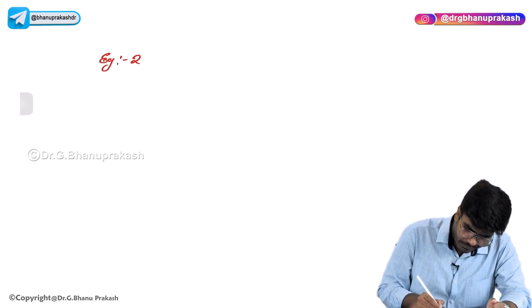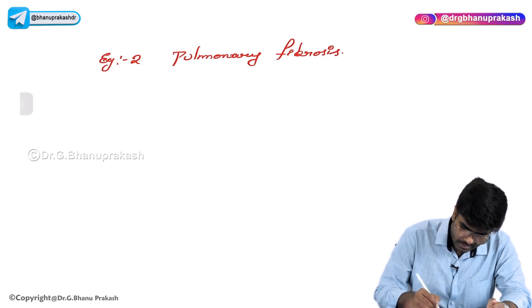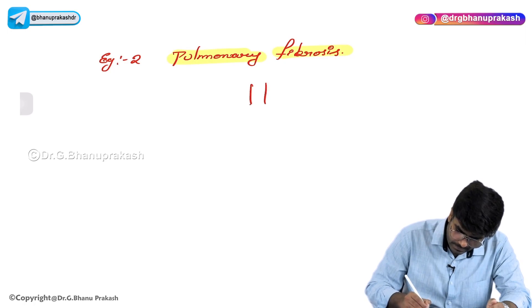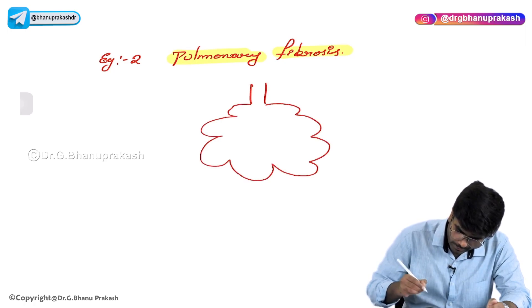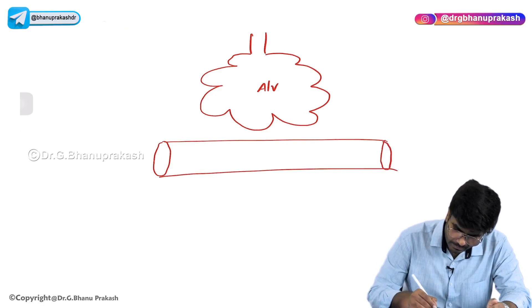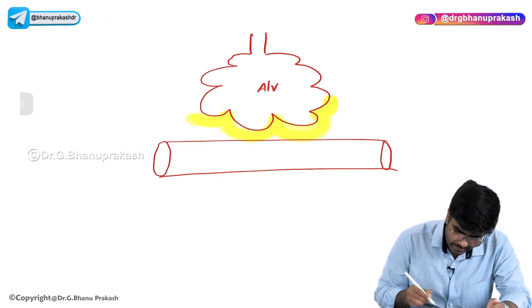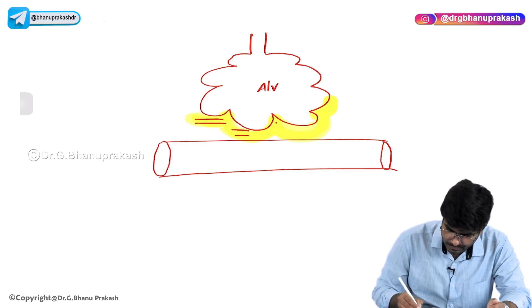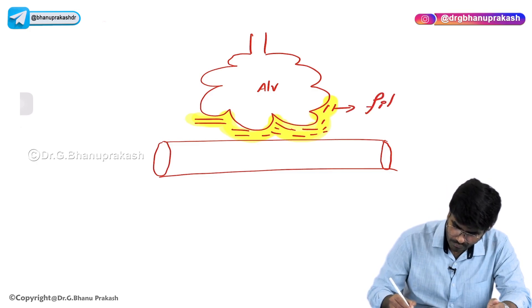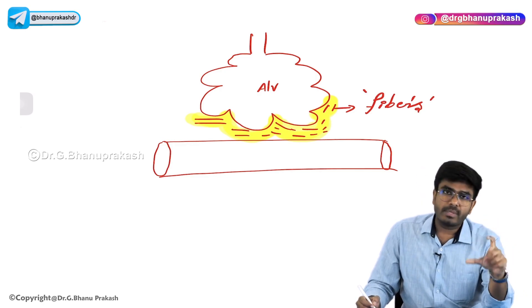Now let's talk about one more abnormality - example number two: pulmonary fibrosis. Here I'm showing you a healthy normal alveoli. The problem in pulmonary fibrosis is the alveolar basement membrane gets too much thickened, because of the deposition of extra fibrotic material. That is called pulmonary fibrosis - there is deposition of fibers.